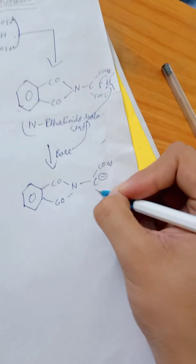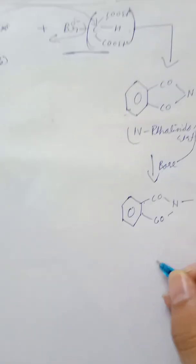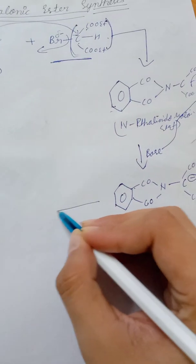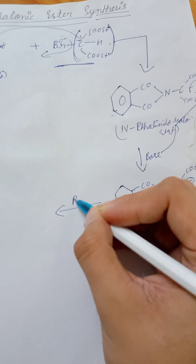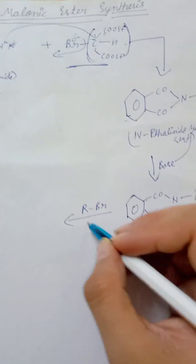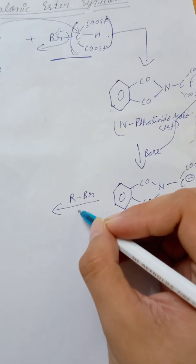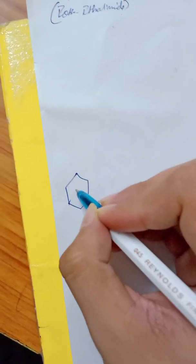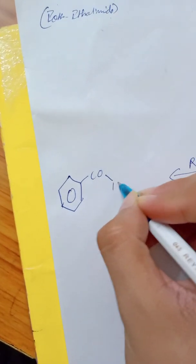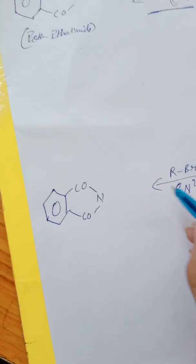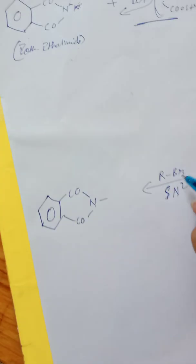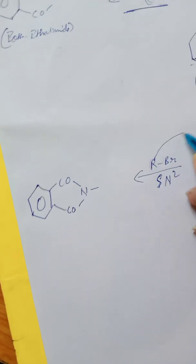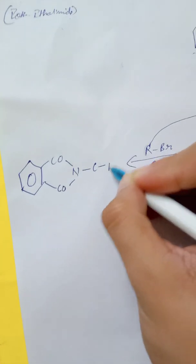So now we will react it with RBr which is an alkyl halide or we can say RX and it will be an SN2 reaction and the product which will be formed. Now this will be the same and now this R will attach here on this carbon.